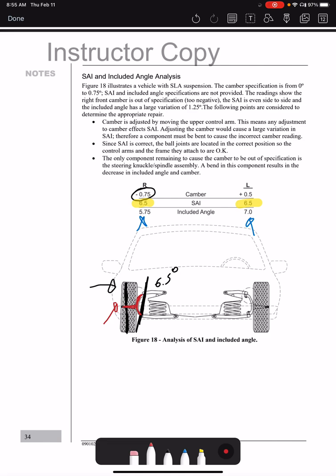The spindle has been bent up, causing that wheel to sit more in, causing the more negative camber. And the repair on this one would not be an alignment adjustment. It would be a correction for the spindle.